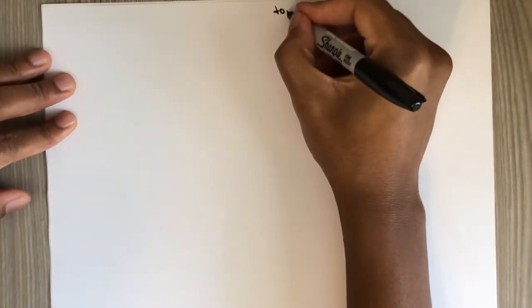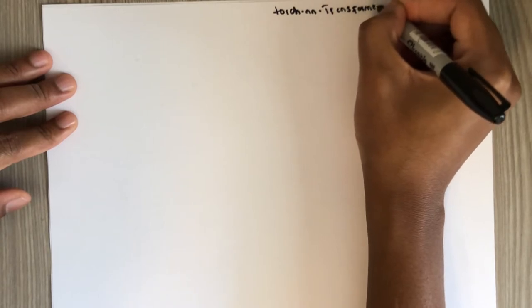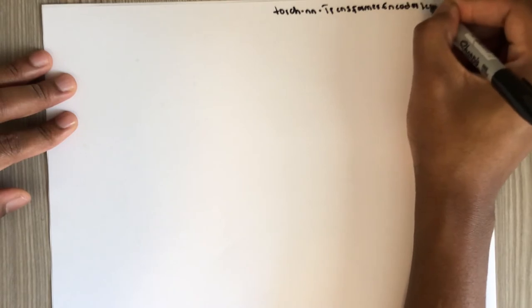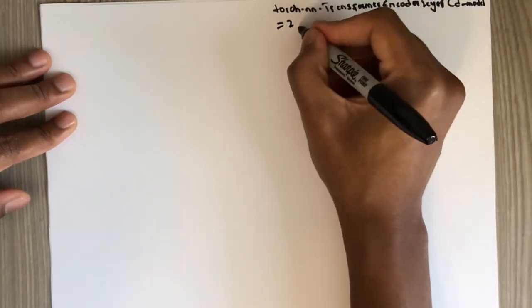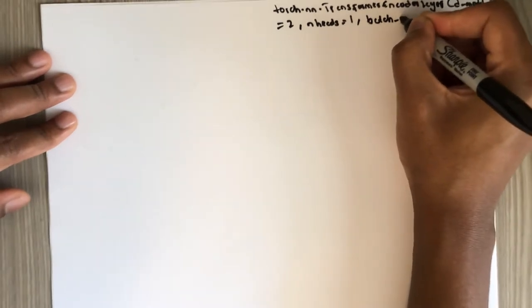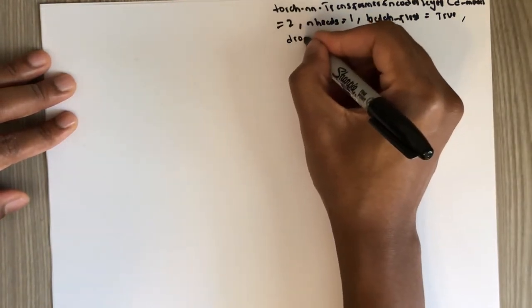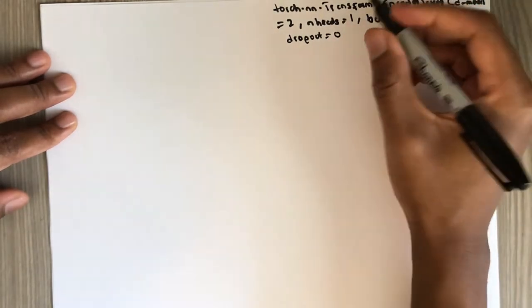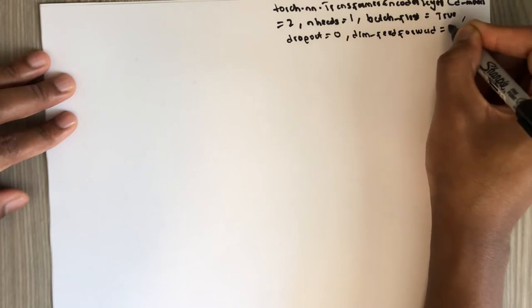In PyTorch we have the module torch.nn.TransformerEncoderLayer, and it has some arguments. For example, d_model — for this example we are going to use 2. Number of heads we are going to use 1. batch_first we are going to set to True, so the first dimension of the input has to be the batch dimension. For simplicity we are going to set dropout to zero, and dim_feedforward we are going to set to 2.